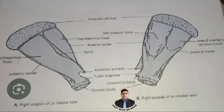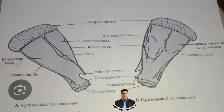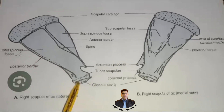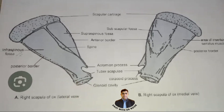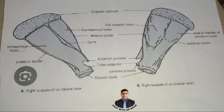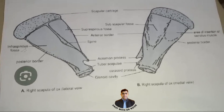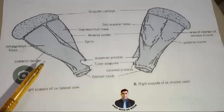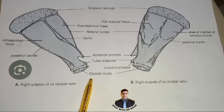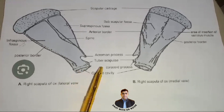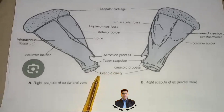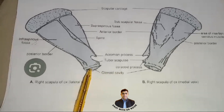Now let's look at the position. This scapula is cranial lateral and the direction is downward and forward. Left and right scapula can be differentiated by the spine and glenoid cavity. If the glenoid cavity faces left, then it will be the left scapula.